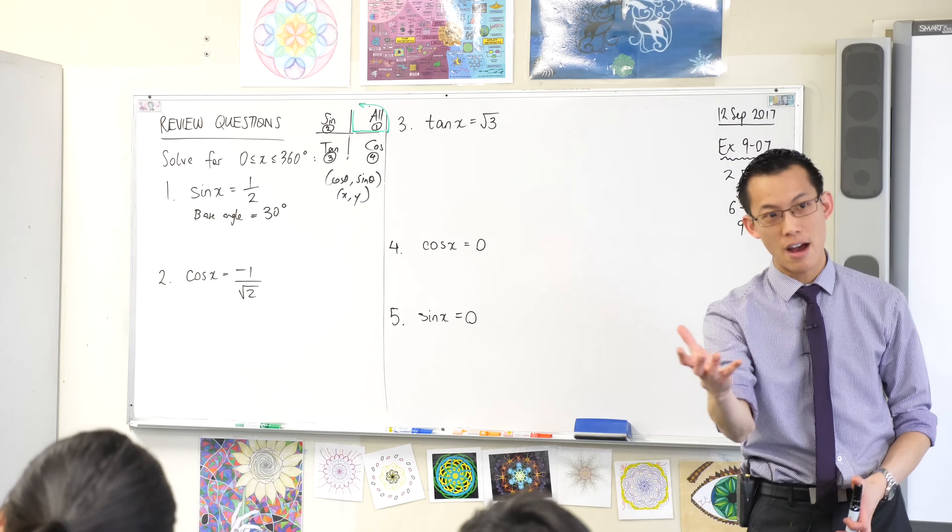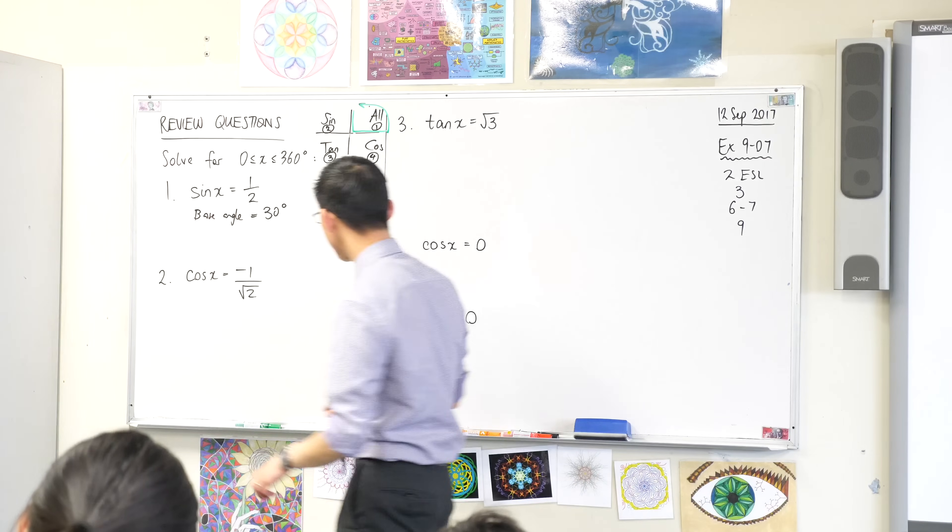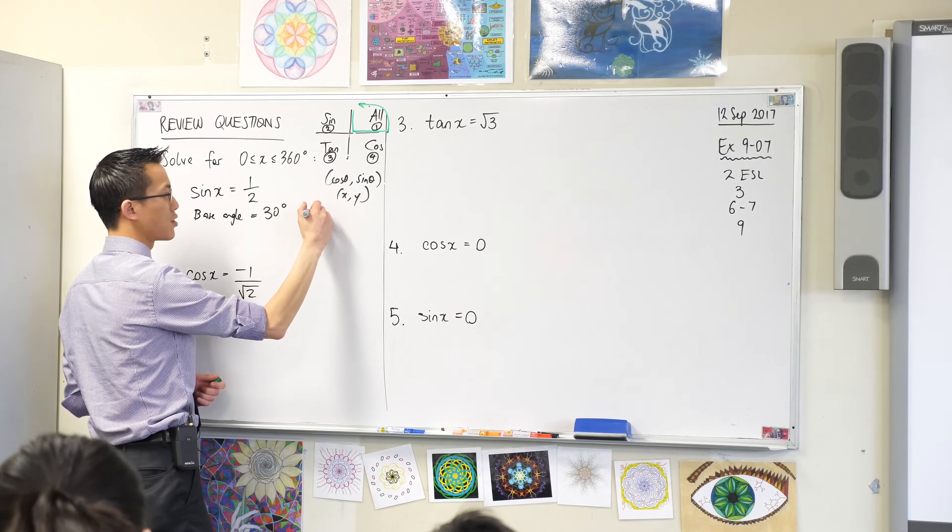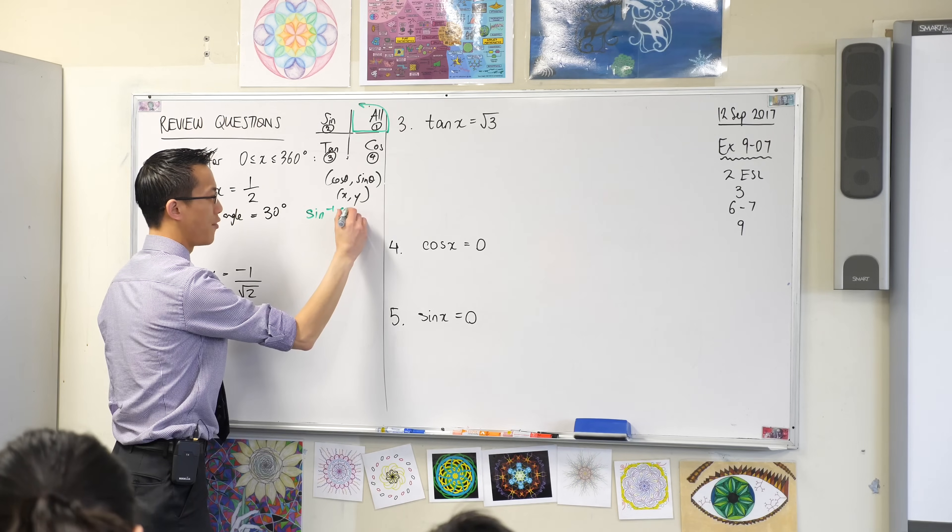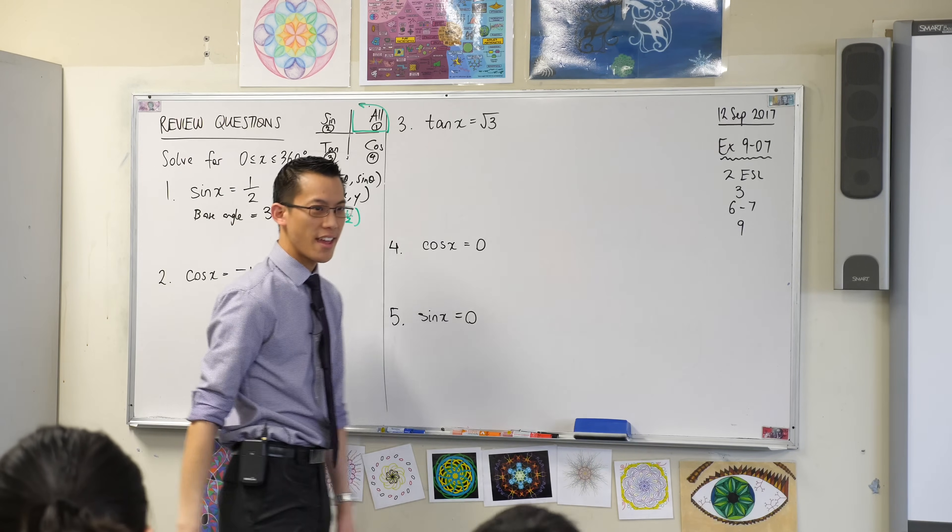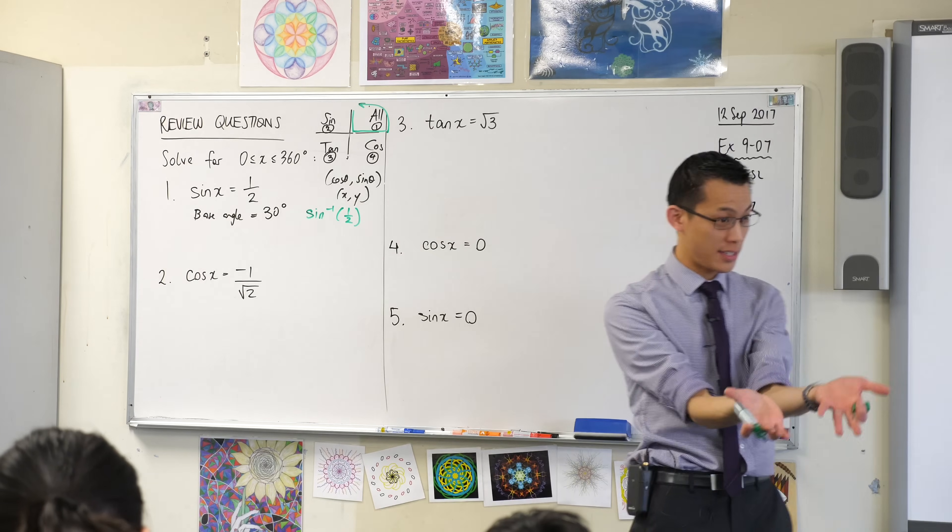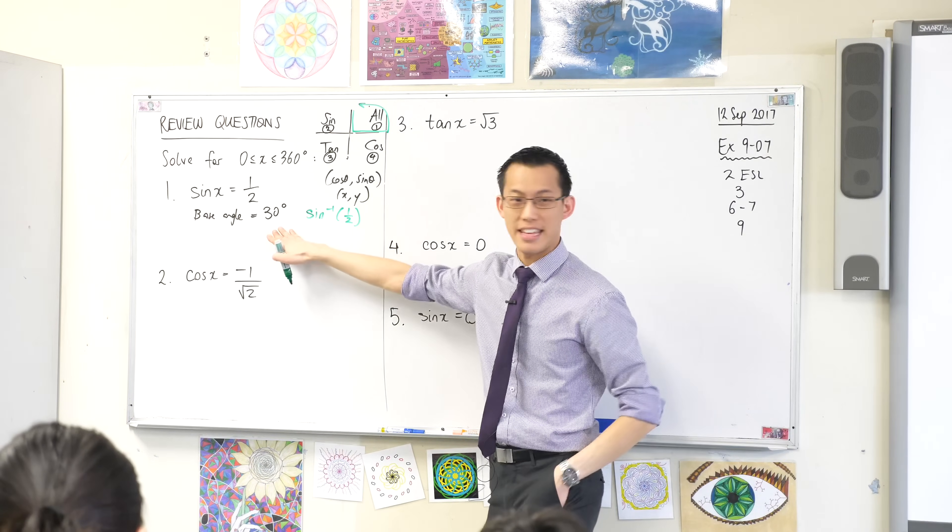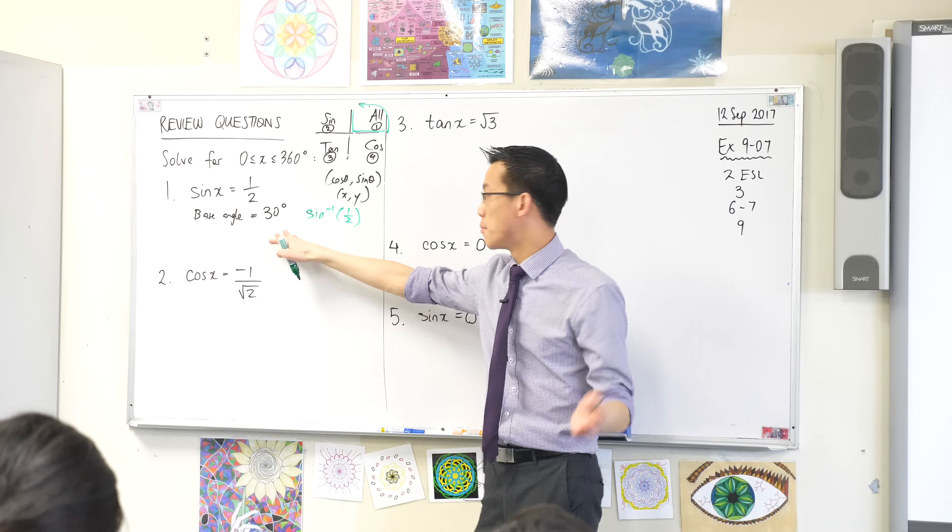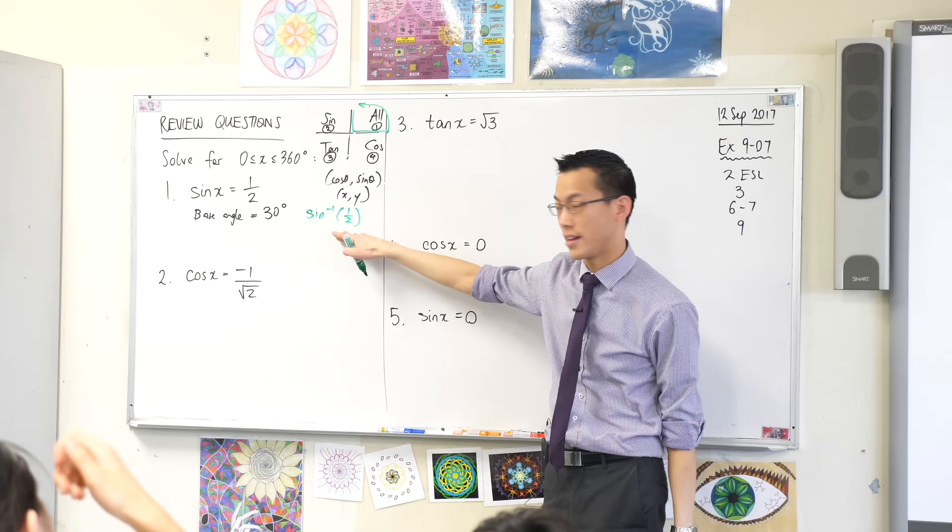You have your calculator there, right? So with your calculator out, what I want you to type in is sine inverse of a half. And it will faithfully return that back to you. Does it say 30? It says 30, right? Fantastic. So if you remember it, then that's great. But if you don't remember it, no problem, that's why you have a calculator, okay?